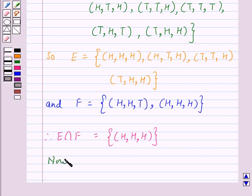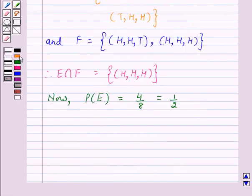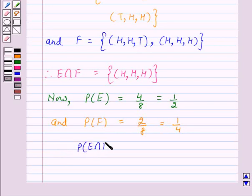Now probability of E is equal to 4 upon 8, which is equal to 1 over 2. And probability of F is equal to 2 upon 8, which is equal to 1 upon 4. And probability of E intersection F is equal to 1 upon 8.